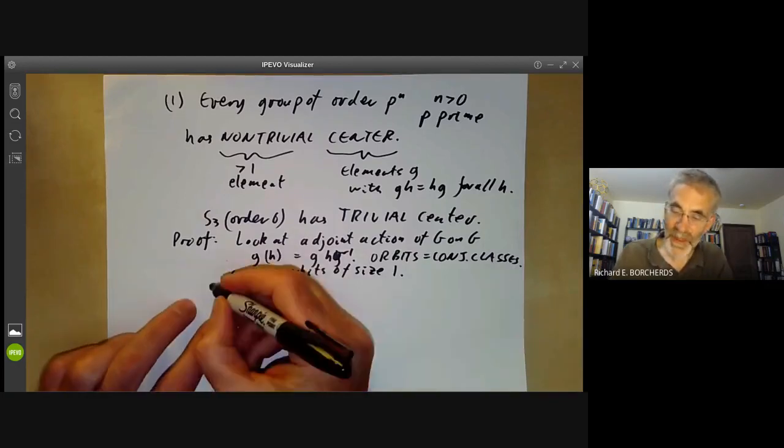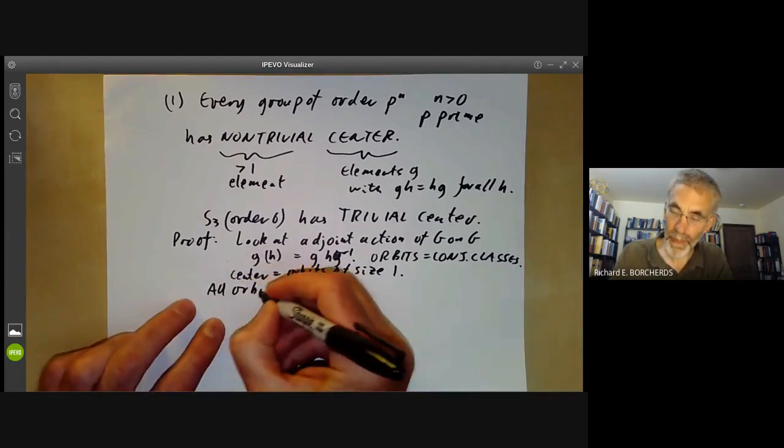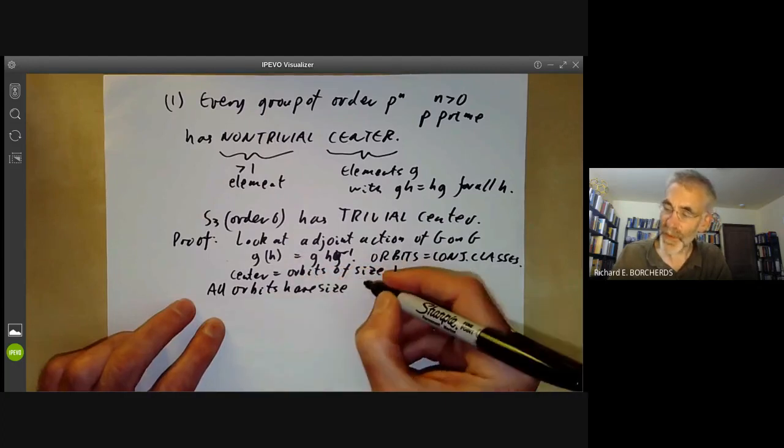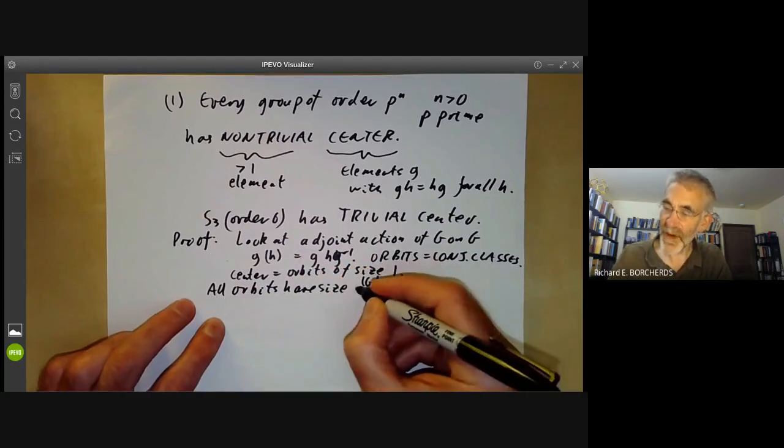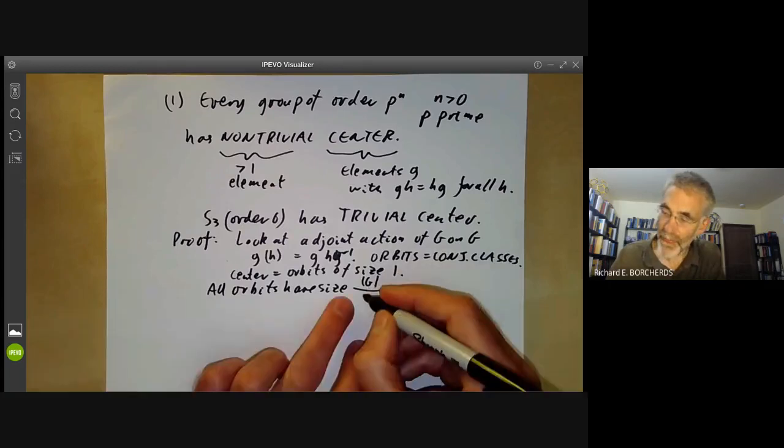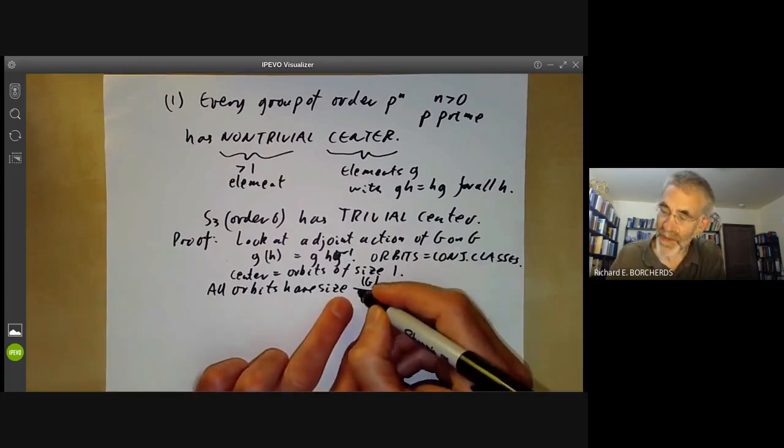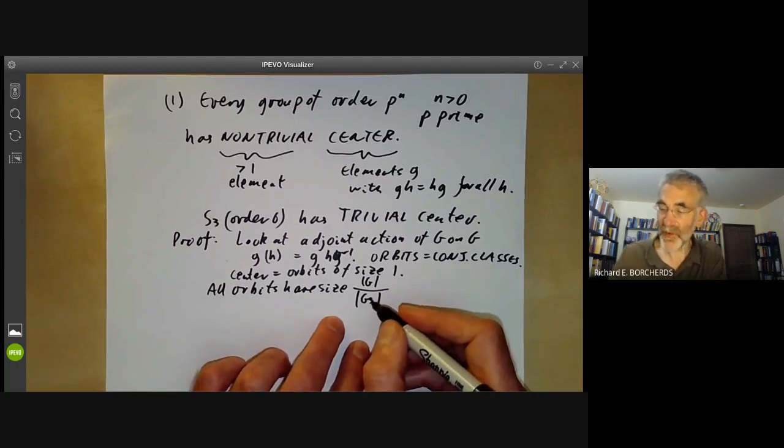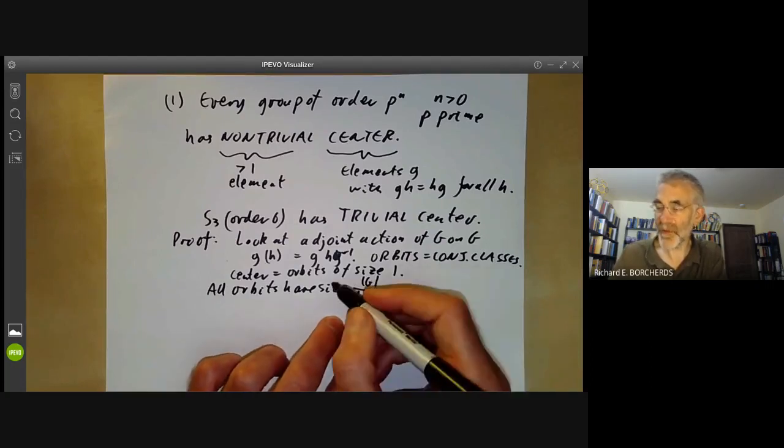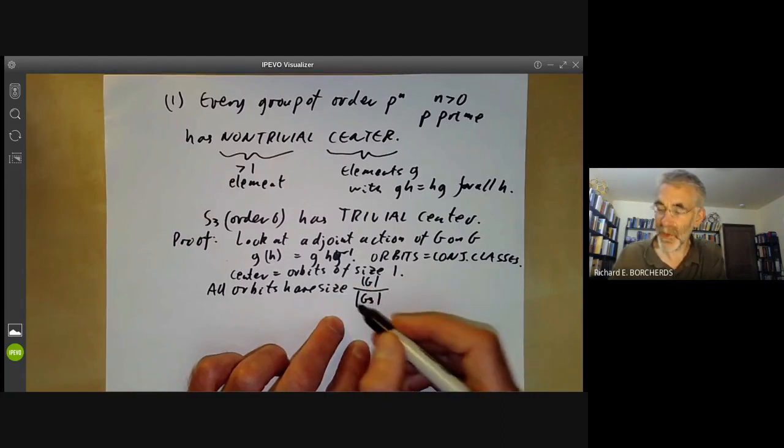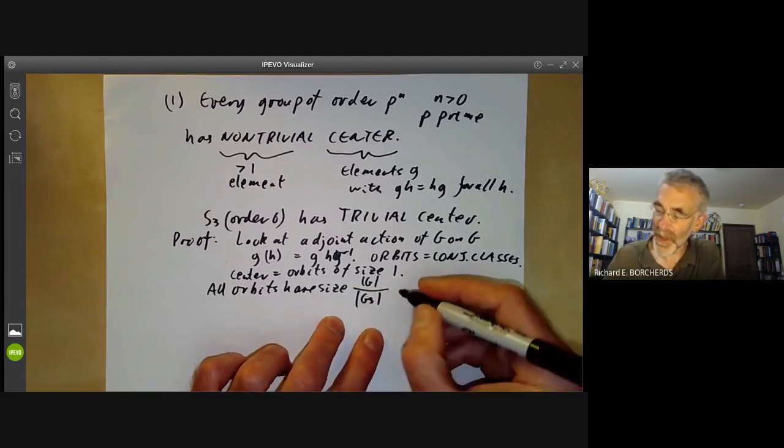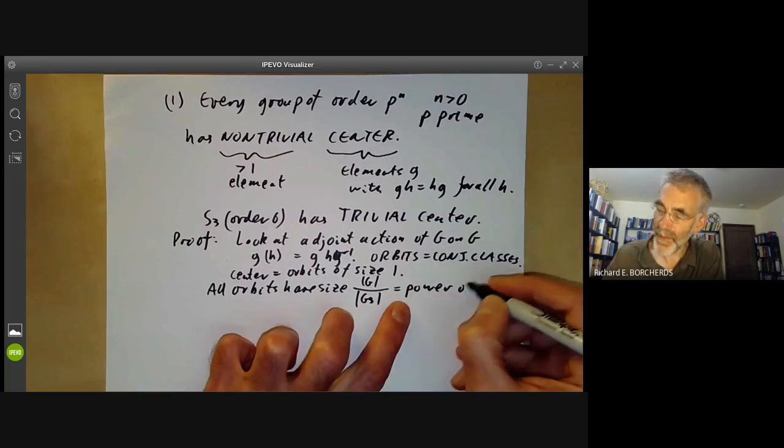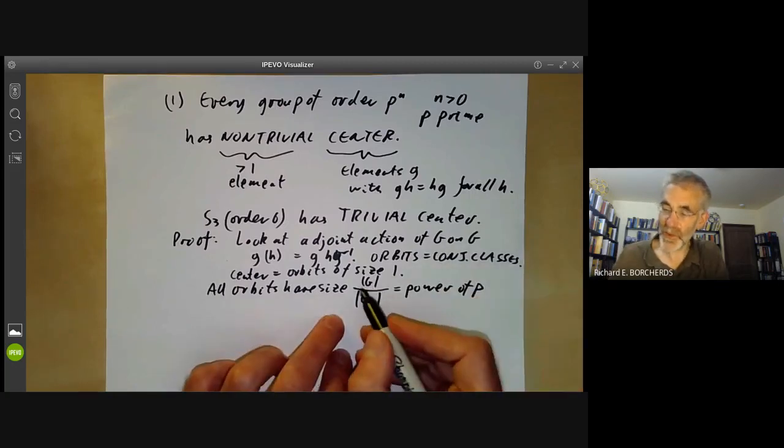And all orbits have size. Well, the size of an orbit is the order of G divided by the order of the subgroup fixing an element of that orbit. So you remember the order of G is the size of an orbit times the subgroup fixing any element of the order. So this is some power of P because we're assuming G has order of power of P.